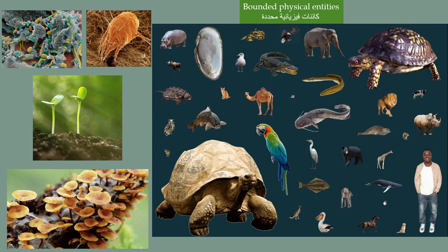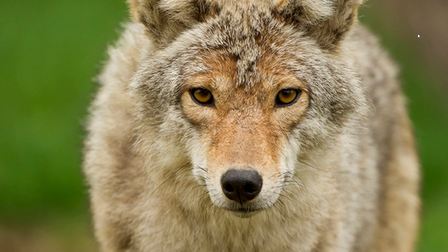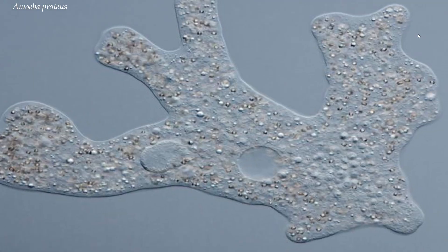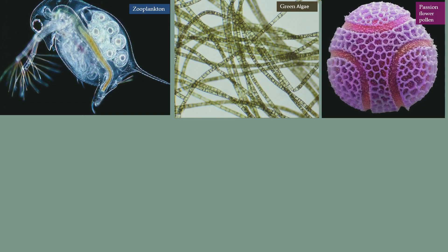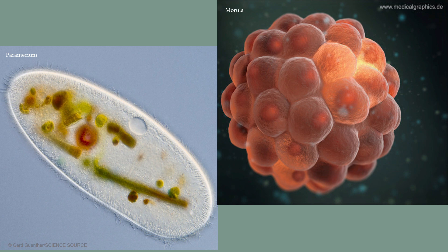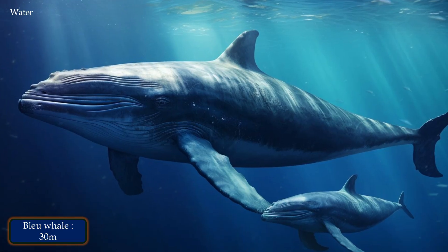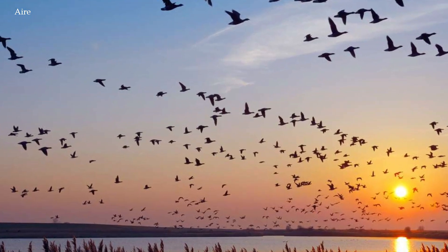Bounded physical entities are classified according to type — being plants, animals, fungi, microorganisms, or protists — and according to scale, being microscopic or macroscopic, and according to number of cells, being unicellular or multicellular, and according to environmental distribution, such as living in soil, water, air, or forests.